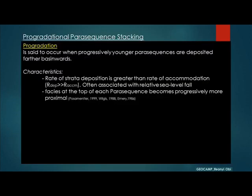Progradation is said to occur when progressively younger parasequences are deposited further basinwards. The key characteristics are: the rate of strata deposition is greater than that of accommodation. That means we have more sediments coming from the land into the basinal areas at a faster rate than the amount of space being created. When that happens, we have the sediments building out towards the sea, and that's what we call progradation.